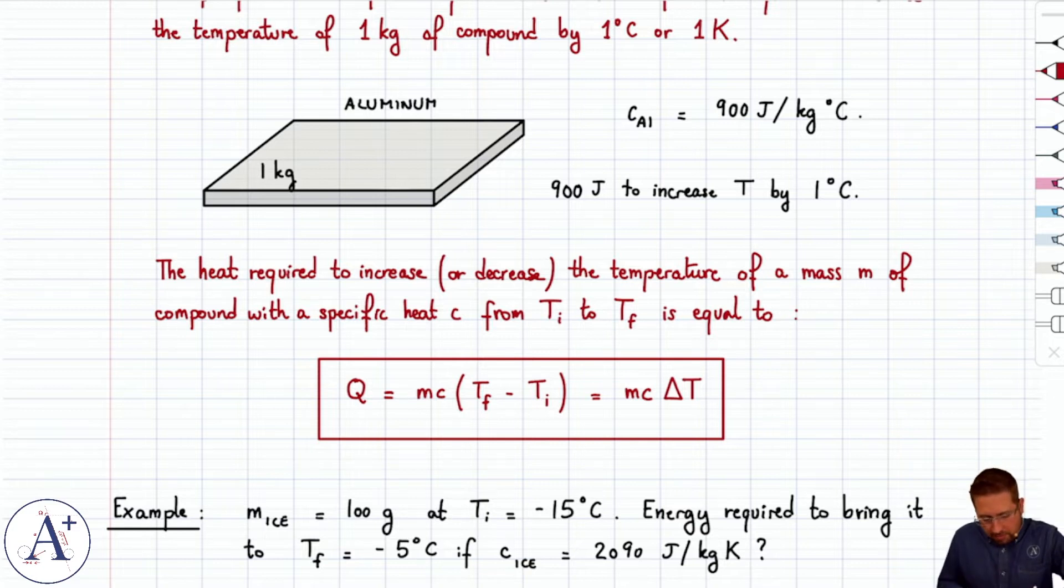It makes sense. Mass, if you have more than one kilogram, you have to multiply by seven kilograms if that's what you have. So you need seven times more energy. And if your delta T is not one degree, but it's ten degrees, then you have to multiply the whole thing by ten also, because you have to increase the temperature by one degree ten times, if you want to think of it that way.